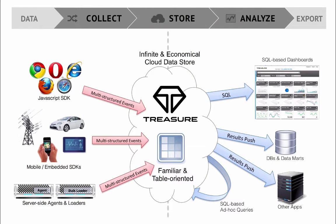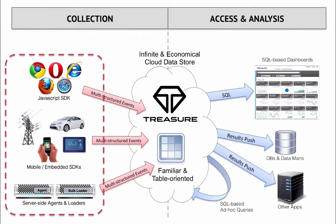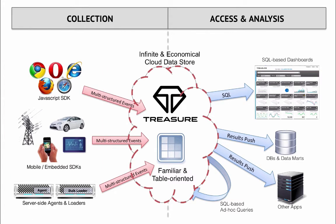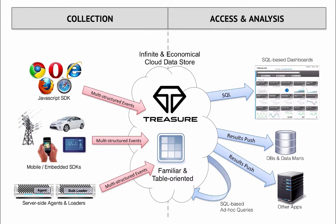Now let's cover the main concepts you'll want to be familiar with when working with TreasureData. In terms of functionality, TreasureData can be split into two main halves: collection, which puts data into TreasureData, and access and analysis, which enables you to work with the data once it's in TreasureData. TreasureData includes a variety of collectors, including agents and SDKs, that make it easy to send data into the TreasureData managed cloud service, where data is automatically organized and stored into familiar tables that can be queried using familiar SQL, as if they were in a common relational database. This means you can easily collect streaming event data from various different sources, and anyone familiar with SQL queries has self-service access to explore the data as it arrives.